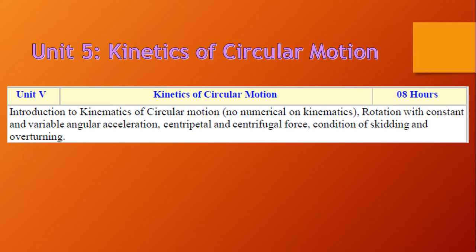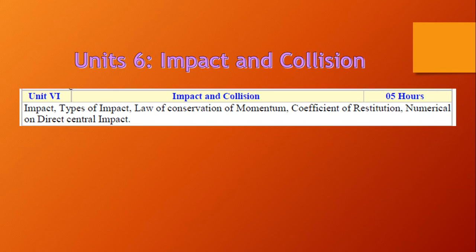Unit 5 is kinetics of circular motion. It includes an introduction to kinematics of circular motion with no numericals on this, followed by rotation with constant and variable angular acceleration, centripetal and centrifugal forces, and condition of skidding and overturning. Unit 5 requires eight hours of teaching.